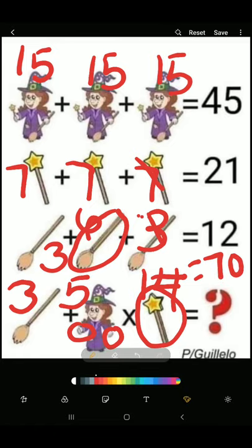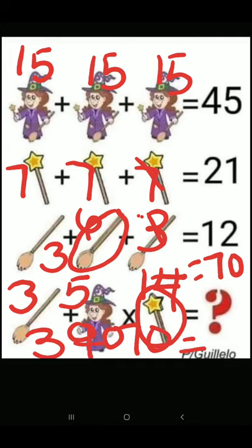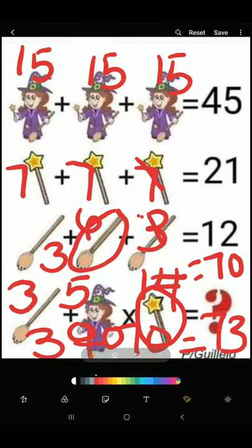And then we want to bring everything down and say 3 plus 70 equals 73. And that is the answer to this equation, 73.